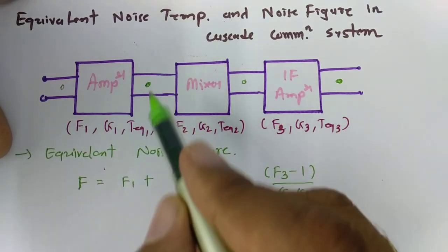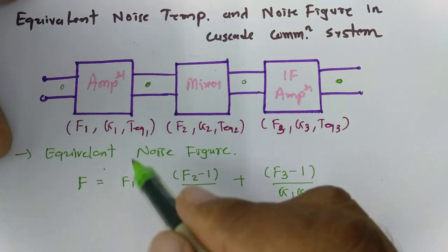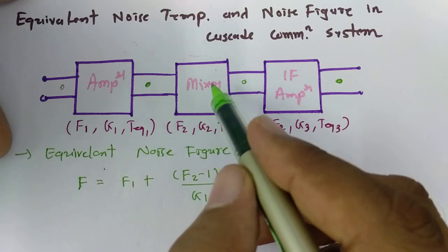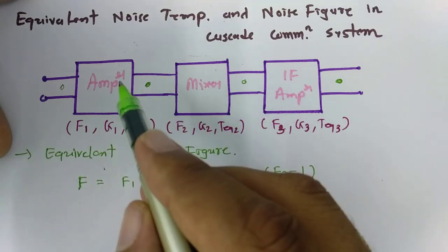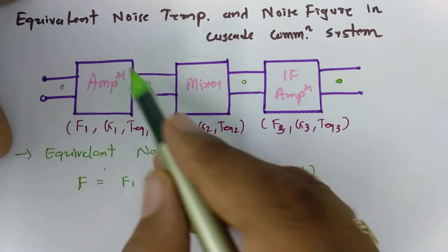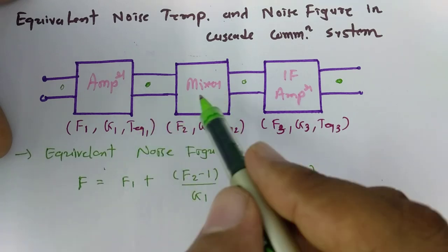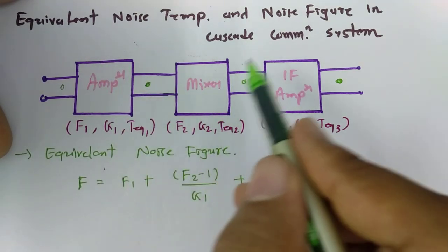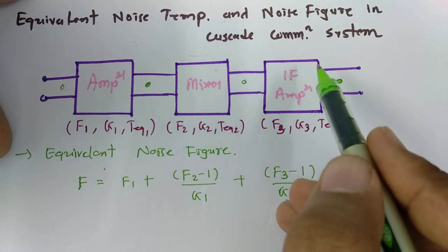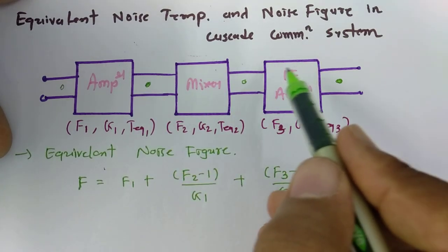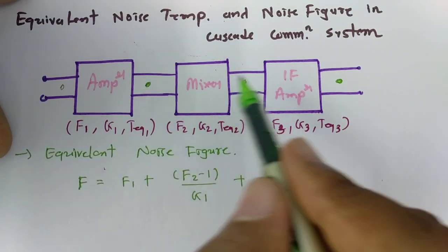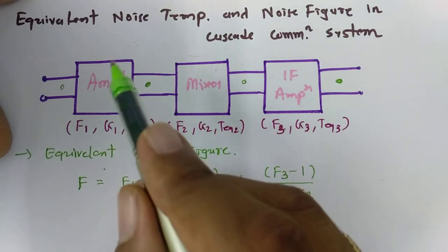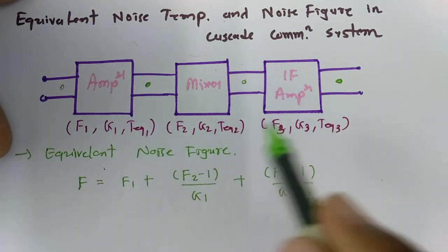The noise figure of one block can be calculated directly, but in a cascaded system, the second block's noise figure is affected by the first block's gain. So we add the first block's noise figure, plus the second block's (F2 − 1)/G1, plus (F3 − 1)/(G1·G2) for the third block, and (F4 − 1)/(G1·G2·G3) for a fourth block.